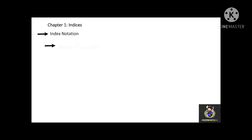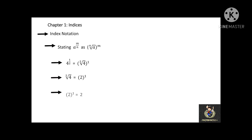The last part of this chapter is stating a to the power of m over n as the nth root of a to the power of m. For example, 4 to the power of 1 over 2 can be stated as the square root of 4 to the power of 1, where the square root of 4 is equal to 2, then 2 to the power of 1 is also equal to 2.